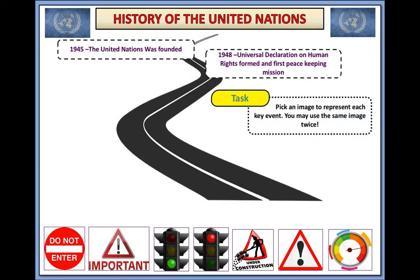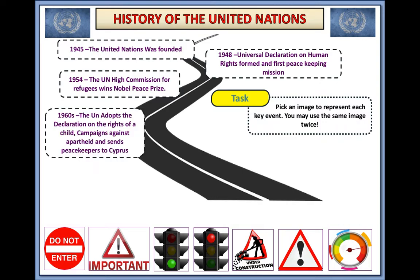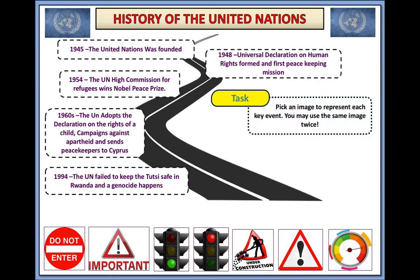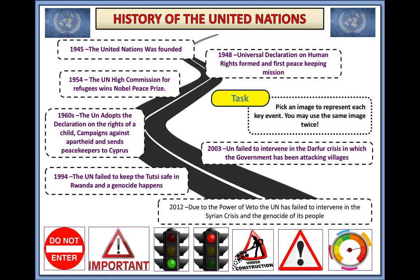The United Nations was formed in 1945. In 1948 it set up the Declaration on Human Rights and the first peacekeeping missions happened. The UN High Commission for Refugees won a Nobel Peace Prize in 1954. In 1960 the UN adopted the Declaration on the Rights of a Child, campaigned against apartheid, and sent peacekeepers to Cyprus. Unfortunately, in 1994 the UN failed to keep the Tutsis safe in Rwanda and a genocide occurred. In 2003 the UN failed to intervene in the Darfur crisis. In 2012, due to the power of veto, the UN failed to intervene in the Syrian crisis and the genocide of its people.